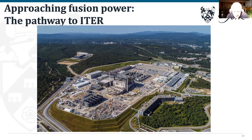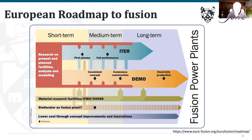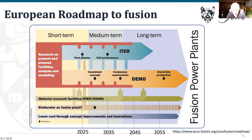ITER is a key part of the European roadmap to fusion and of most national strategies. First plasma is around 2025, with full deuterium-tritium operations from 2035. In parallel, the post-ITER machine DEMO is being designed to demonstrate commercial viability. Materials research runs throughout; a dedicated materials testing machine called IFMIF-DONES will be needed since ITER won't produce enough neutrons to fully test materials in a neutron environment.